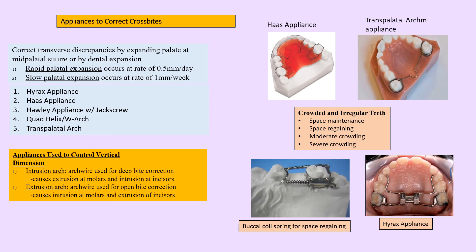Appliances to correct cross bite address transverse discrepancy by expanding the palate at the mid-palatal suture. Orthodontic discrepancies occur in three planes: anteroposterior (Class 2, Class 3), transverse (cross bite), and vertical (open bite, deep bite). Rapid palatal expanders like Hyrax and Haas expand at 0.5 mm per day; slow palatal expanders like transpalatal arch, quad helix, and Hawley expand at 1 mm per week. For vertical dimension control, the intrusion arch treats deep bite by intruding incisors and extruding molars, while the extrusion arch is used for correcting open bite.